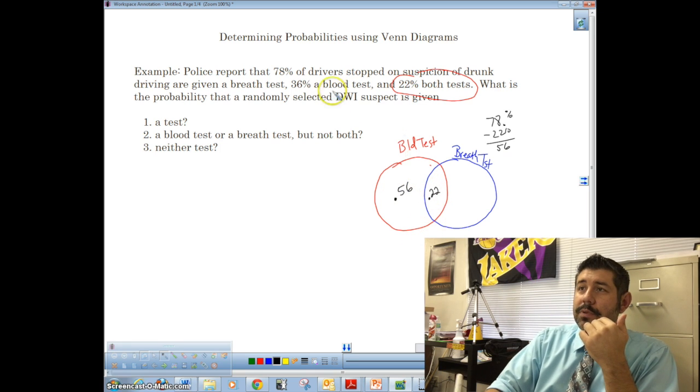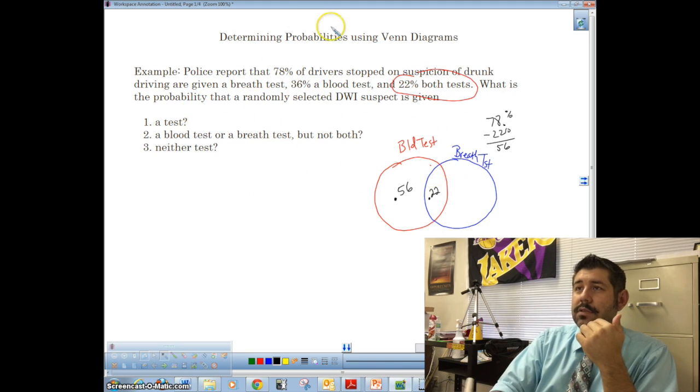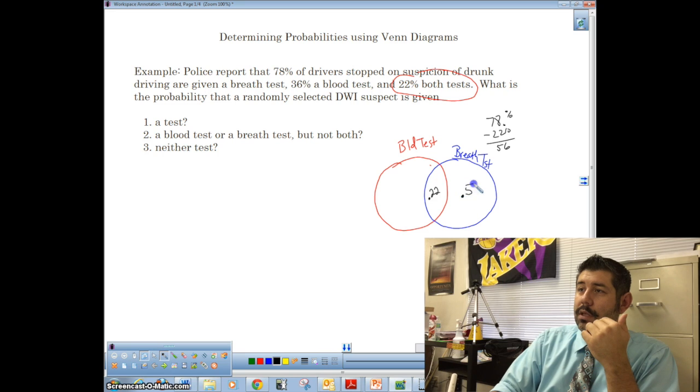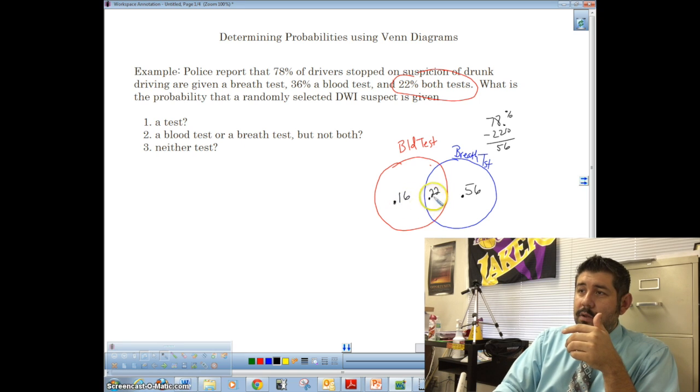Now, if this is 22% and all of breath tests, oh, I had these backwards, guys. That was breath test. So let me just erase that real quick. 56 over here. Okay, so if all of blood tests was 36%, then we would subtract 36 from 22, and we get what's it, 16%, is that right? 38, yeah. Oh, 36, so it's 14, 14%.